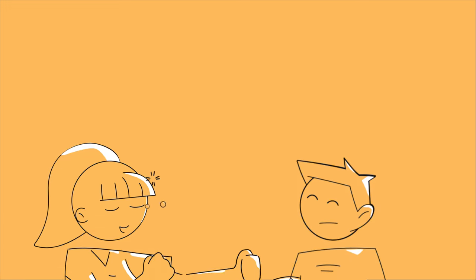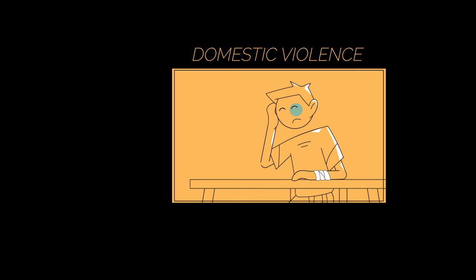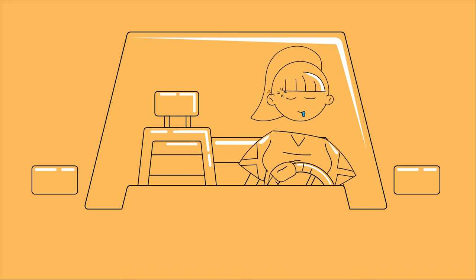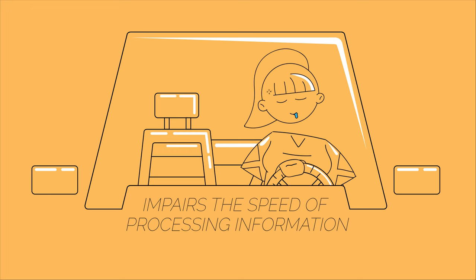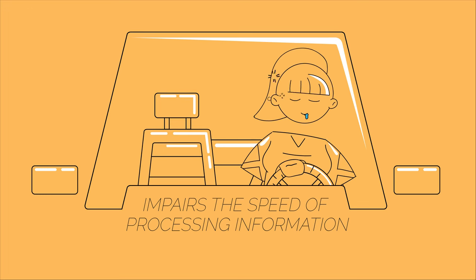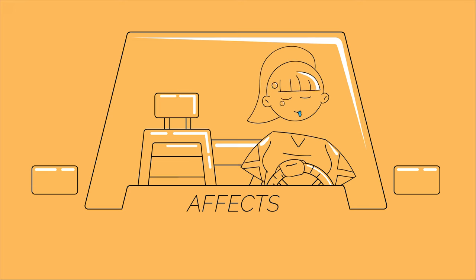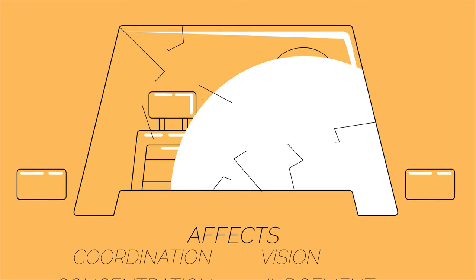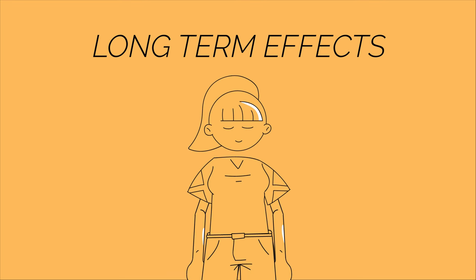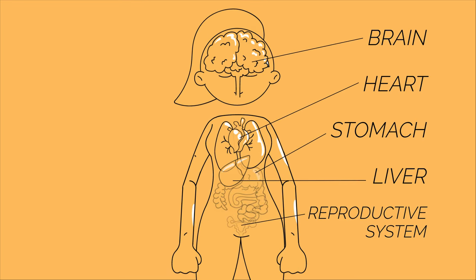Drinking alcohol can have serious consequences for people around the drinker too. It can make people more violent and is linked with reports of domestic violence. Drinking alcohol before driving is dangerous because it impairs the speed of processing information and so increases reaction time. It also affects coordination, vision, concentration and judgment.